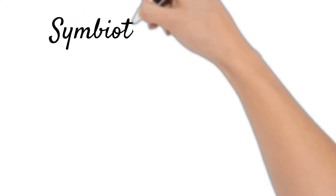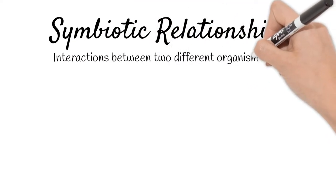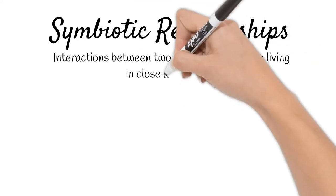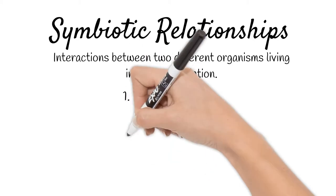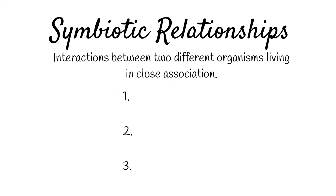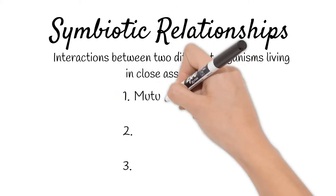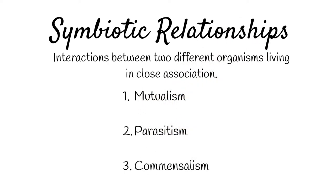Today we'll be discussing symbiotic relationships. Symbiotic relationships are interactions between two different organisms living in close association. There are three types of symbiotic relationships: mutualism, parasitism, and commensalism.